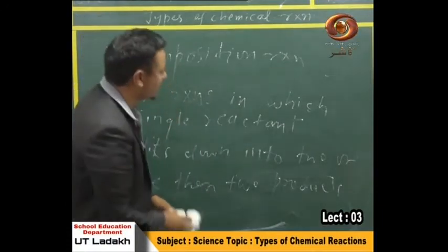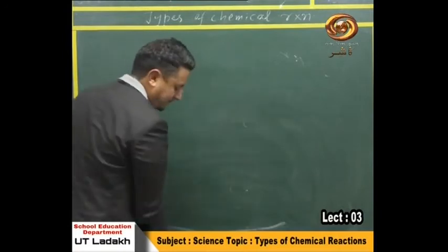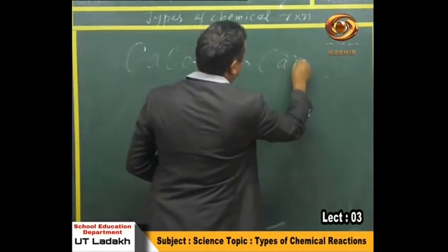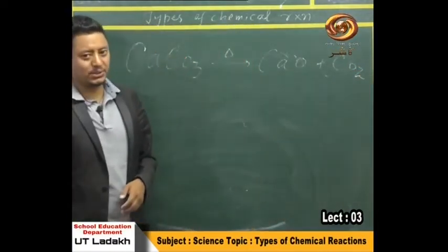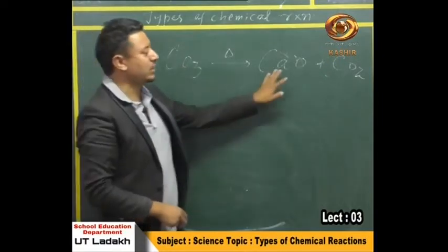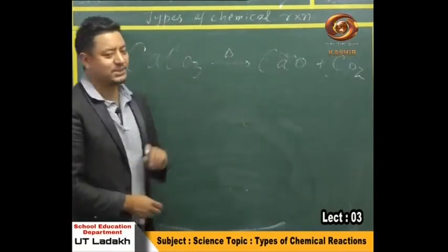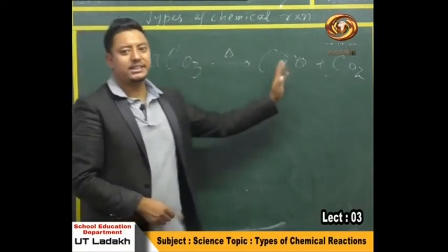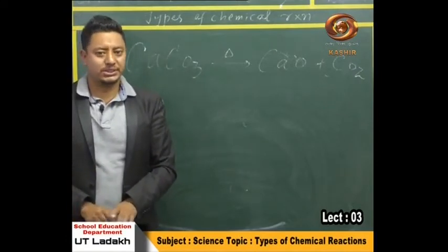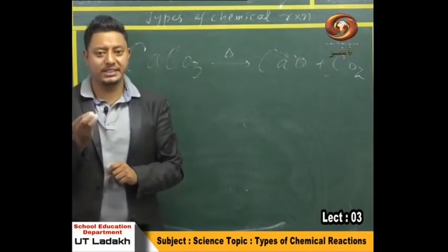Let me give you an example. Calcium carbonate (CaCO₃), on heating, gives calcium oxide plus carbon dioxide. It is the reverse of combination reaction: in combination there were two reactants on the left and one product on the right, but here there is one reactant on the left and two products on the right. We are going to conclude decomposition reaction by studying its types — there are three types.